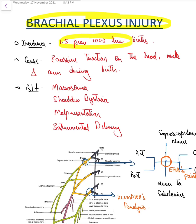The incidence is as high as around 1.5 per thousand live births. It is mainly caused by excessive traction on the head, neck and arm during delivery. Whenever there is excessive pull of the head and neck during birth, we can expect brachial plexus injury to happen.